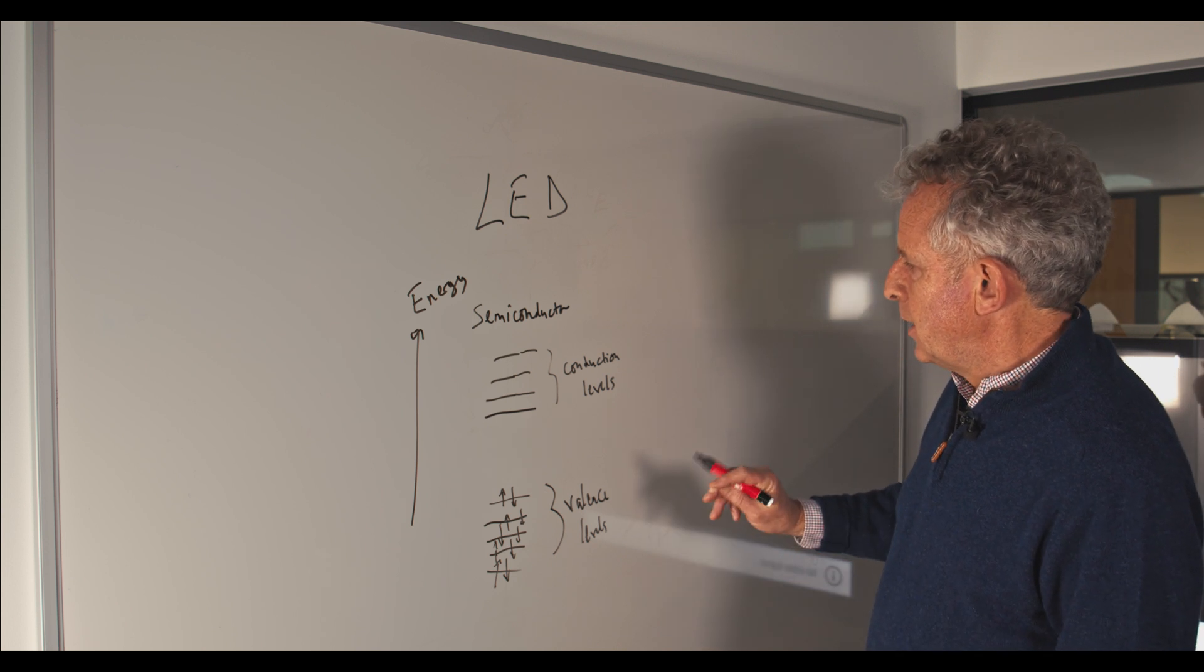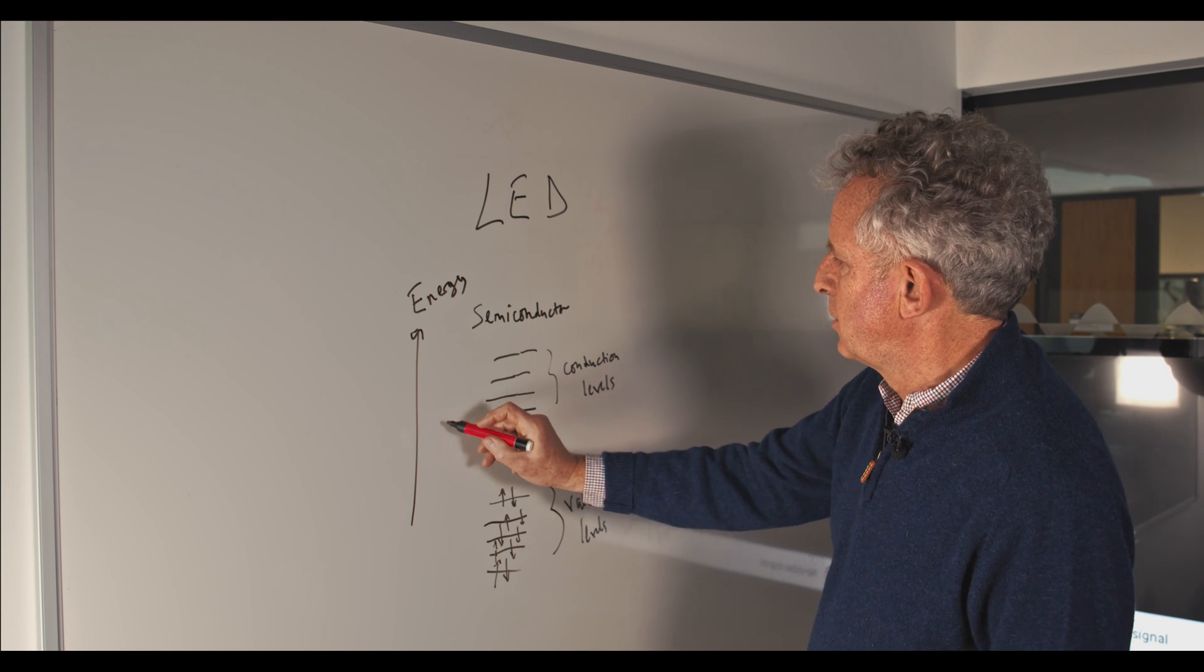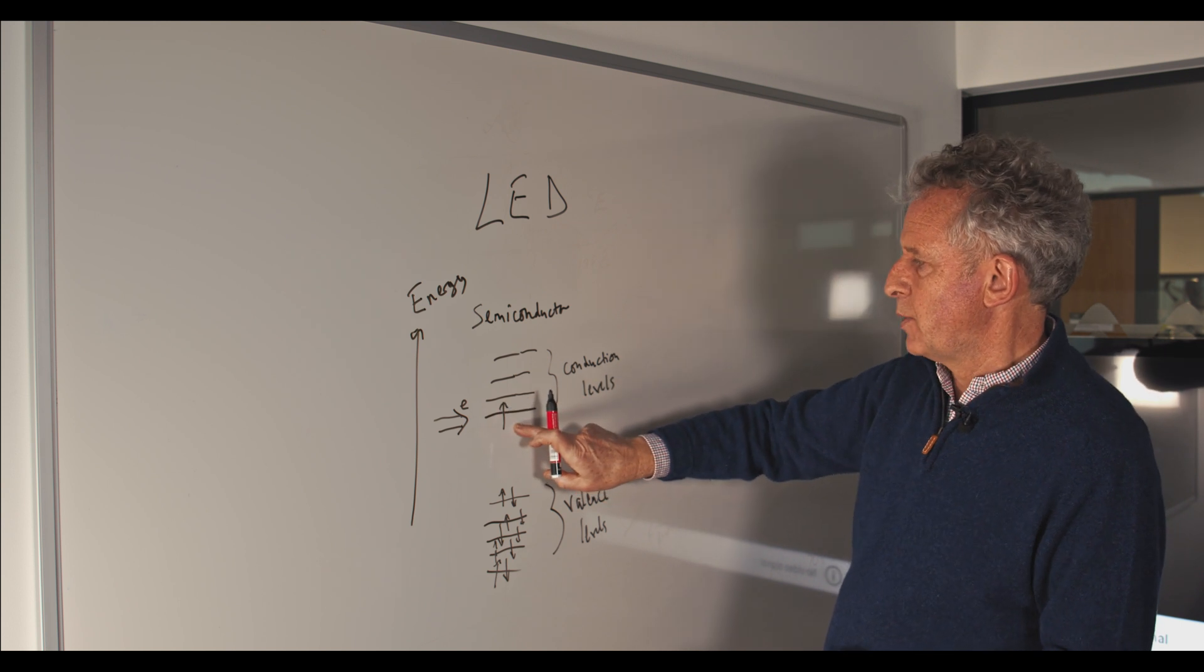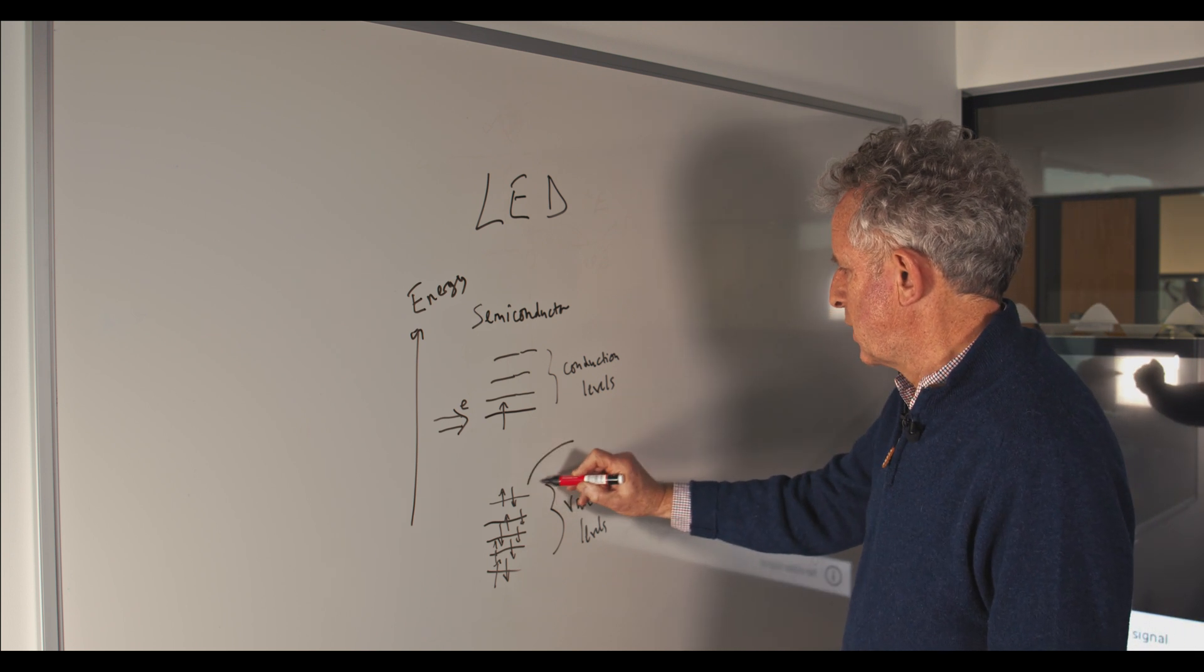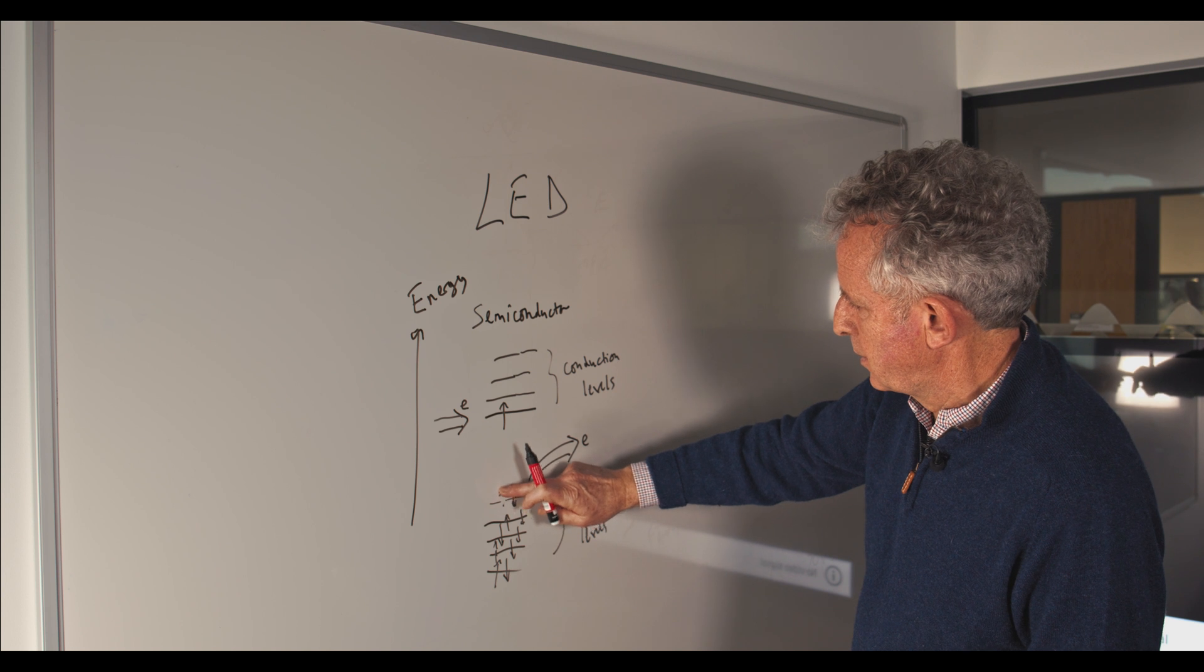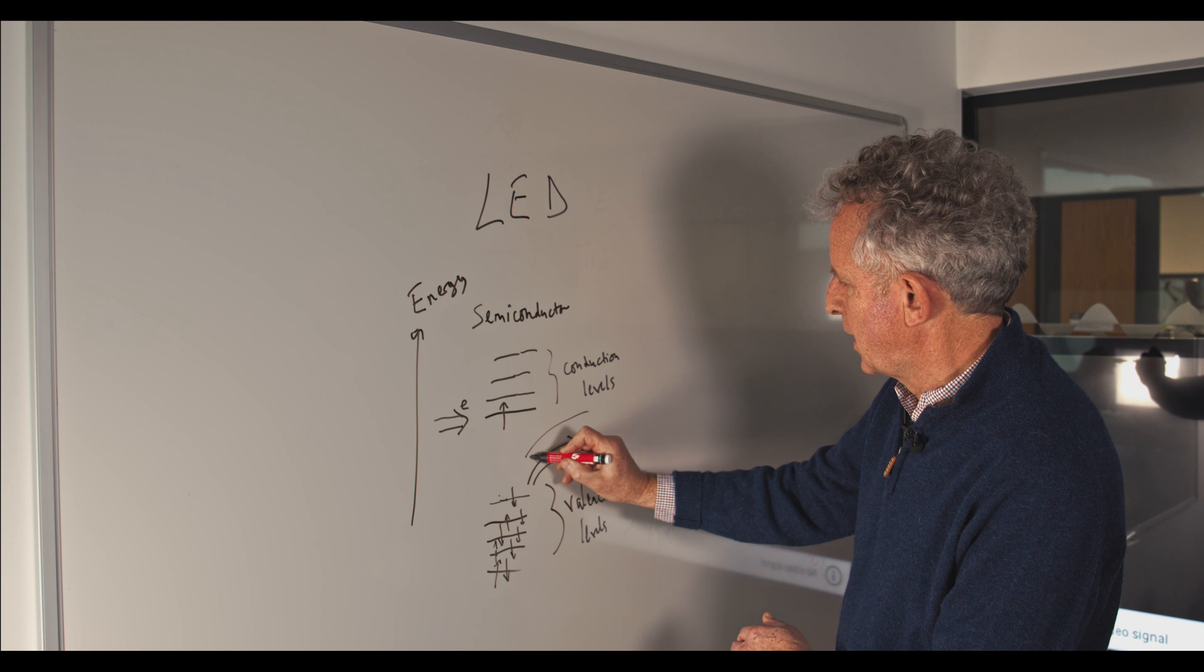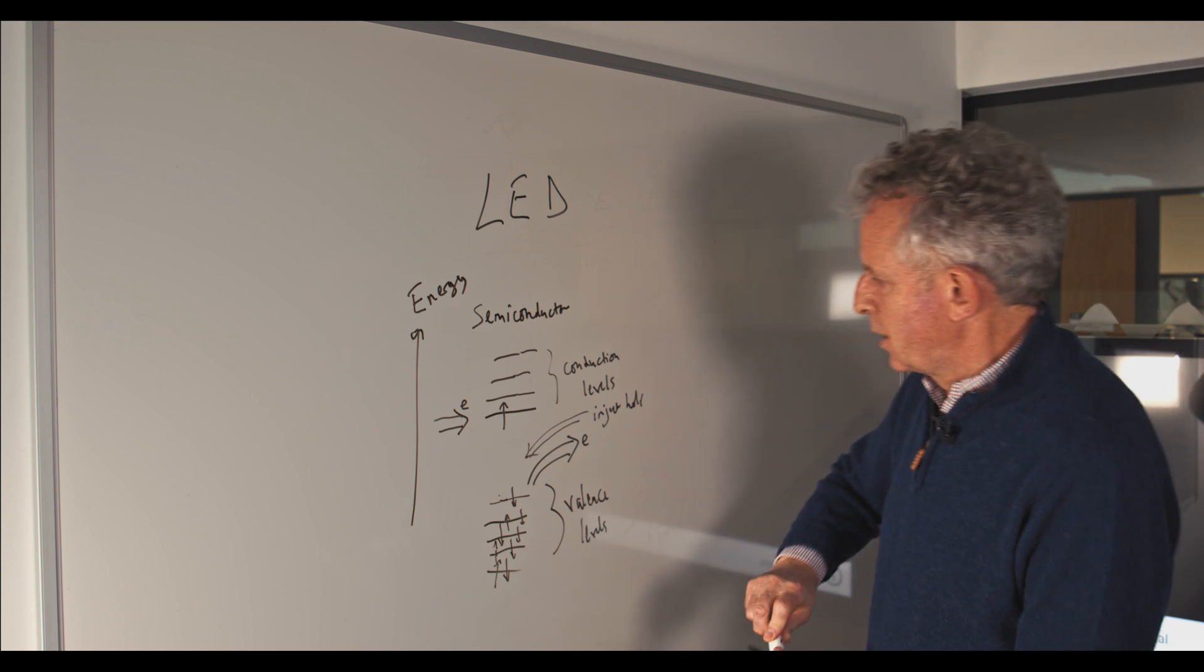So if we make an LED, what we will do is we will have electrodes to either side and we will introduce an electron from one side which will occupy the lowest unfilled level. Then on the other side we need to extract an electron so that what we end up with is an empty state there, and that is sometimes referred to as injecting a hole.